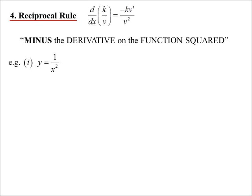So there's a very simple one, 1 on x squared. Sure, I could turn that into x to the negative 2. Or I can say, hang on, that's just minus the derivative on the function squared.